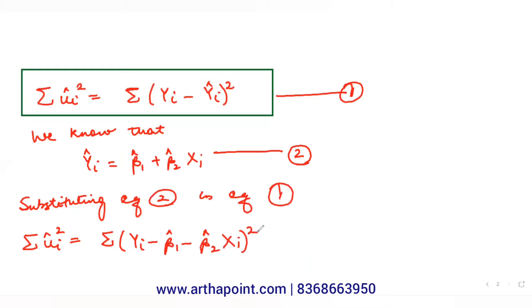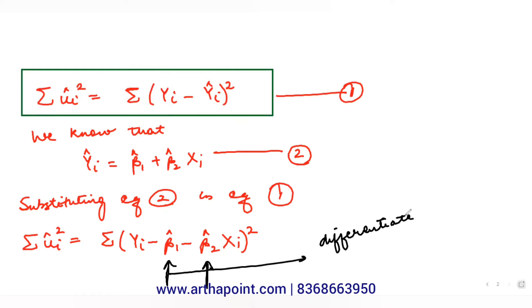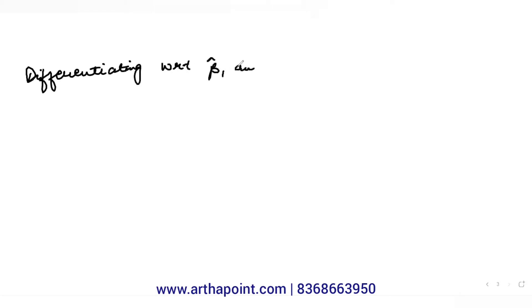We need to find the optimal values of β1 hat and β2 hat. To do that, we differentiate this function with respect to β1 hat and β2 hat. Differentiating with respect to β1 hat: the power comes down, giving 2 times summation of (yi minus β1 hat minus β2 hat xi), multiplied by the inner derivative.